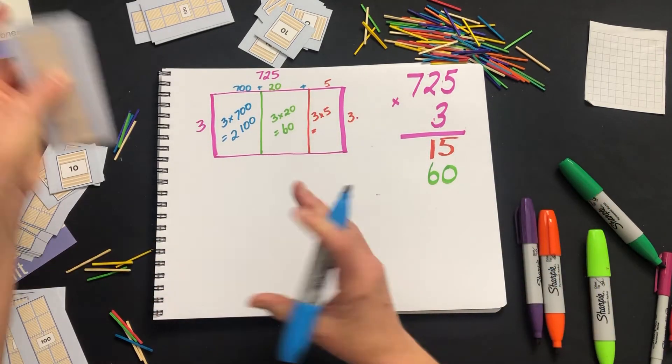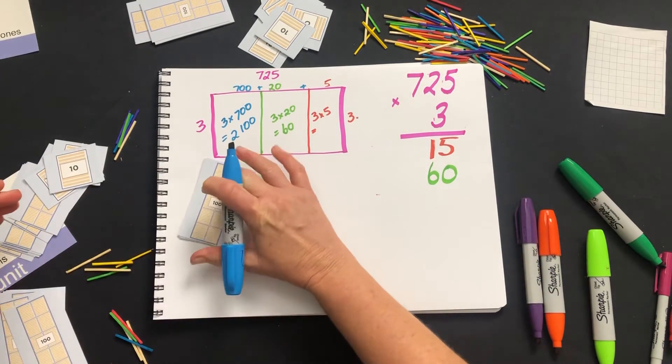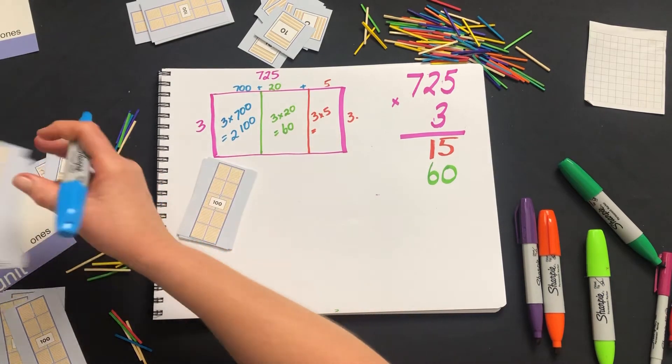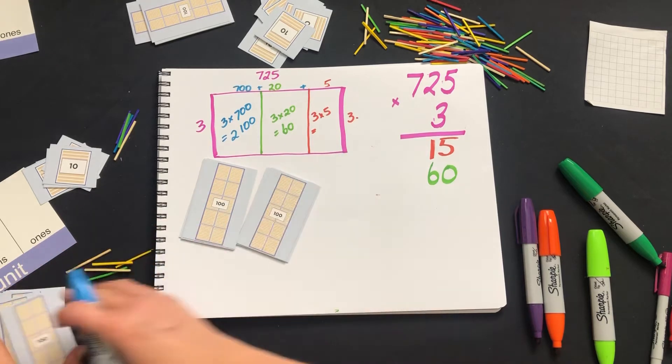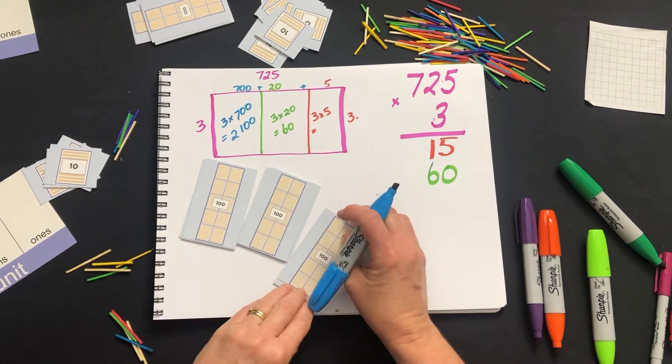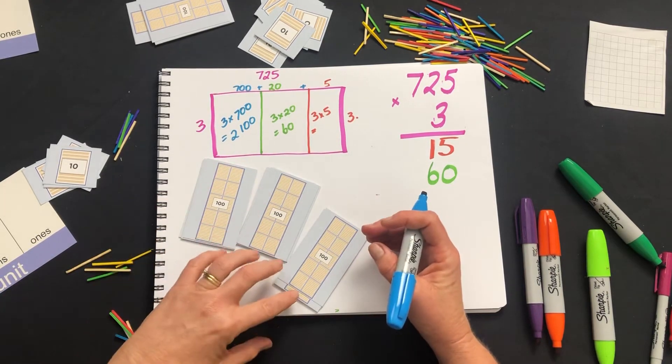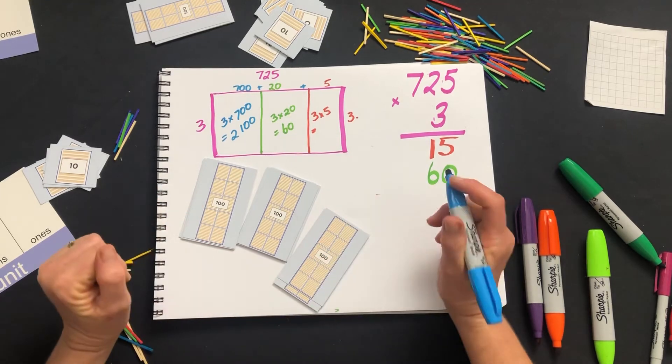Again, if they're having difficulty, you can say we've got 7 hundreds plus another 7 hundreds will give us 14 hundreds, plus another 7 hundreds will give us 2100.